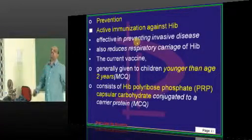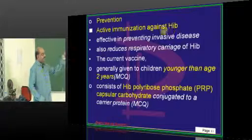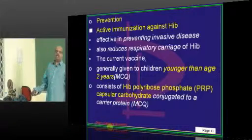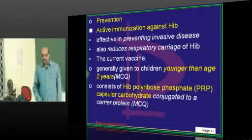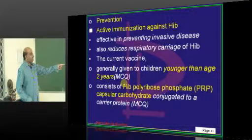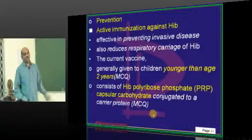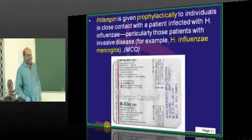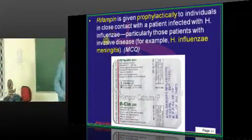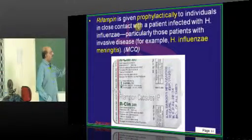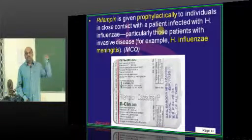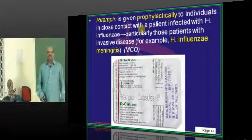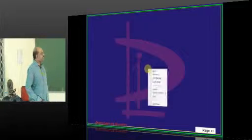Prevention is by vaccination, targeting the most vulnerable — children younger than 2 years of age. The Hib vaccine contains polyribose phosphate capsular carbohydrate conjugated with a carrier protein — it is a conjugated vaccine. Rifampicin is given prophylactically for those who have been in contact with a potential H. influenzae infected case.